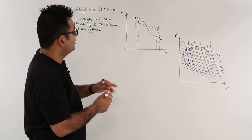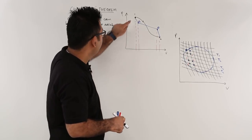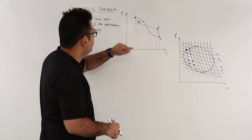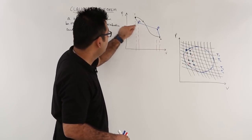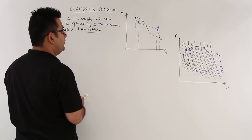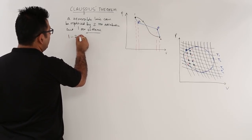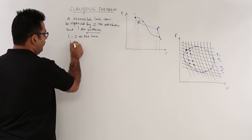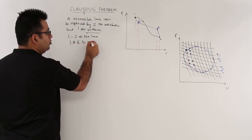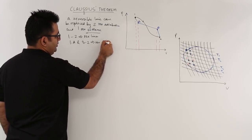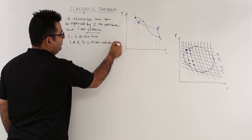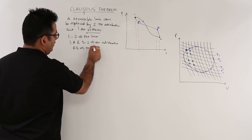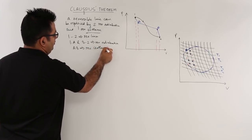So this is what is happening in this particular plot. You have a reversible line which is 1-2, shown as the black colored line, and this can be replaced by two reversible adiabatics — which are 1-A and B-2 — and one reversible isotherm, which is A-B.